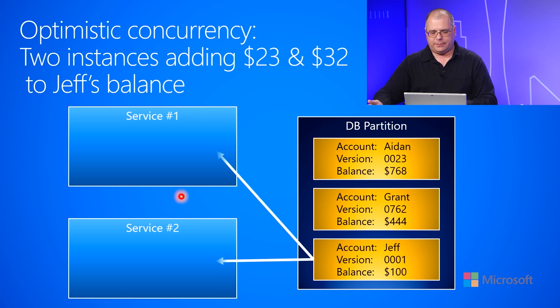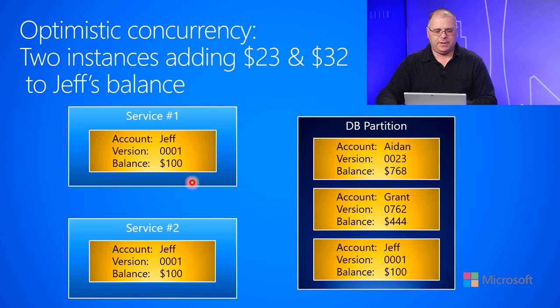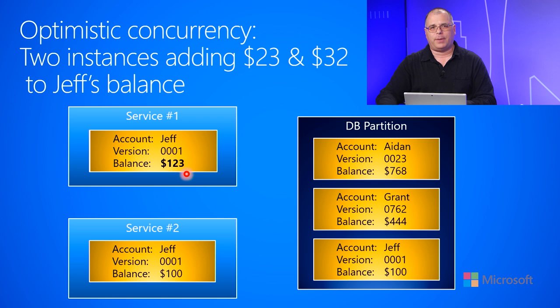These two machines, or ATMs, are going to make a request to go get the information from Jeff's account. They both get that Jeff's account is currently at version one and has $100 in it — both stateless services get the same value. Now the top service wants to add $23, so it's going to increase the balance by $23. The bottom service wants to add $32, so it's going to add $32.